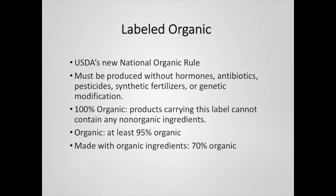One last thing about food labeling is the organic labeling you might see, which is a USDA distinction. For food to be labeled organic it must be produced without hormones, antibiotics, pesticides, synthetic fertilizers, or genetic modification. Something labeled '100% organic' means no part of it can fail to meet these criteria. Something labeled simply 'organic' means at least 95% of it meets these criteria, and 'made with organic ingredients' generally means about 77% organic ingredients.